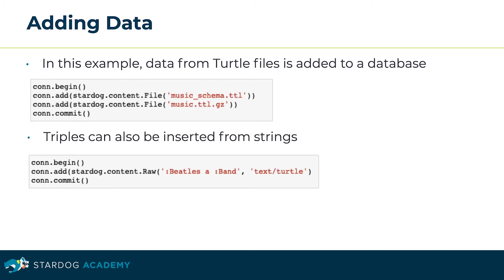We can also add data. In this example, data from turtle files are added to the database by calling the add method of the connection object. Notice we're doing this within a transaction. We can also insert triples directly from strings by adding a Stardog content raw object and passing our turtle string along with the mime type — in this case, text/turtle.